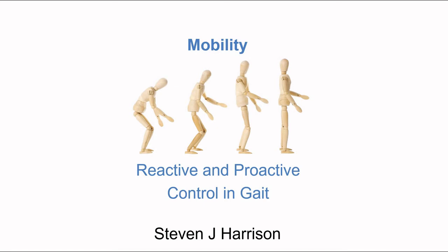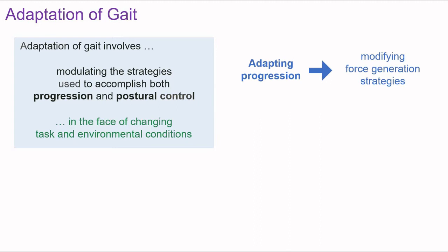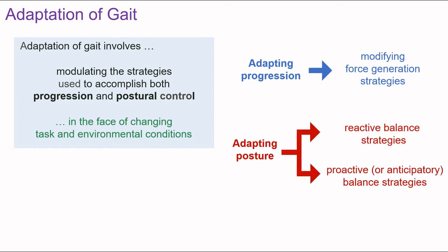In this lecture, we'll be looking at reactive and proactive control of gait. At issue is how gait is effectively adapted in the face of changing task and environmental conditions. We will see that adapting gait involves modulating the strategies used to accomplish both progression and postural control. Adapting the strategy for maintaining upright posture during locomotion can involve both reactive and proactive balance strategies.